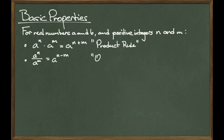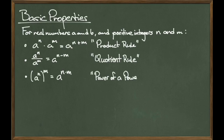The next rule is called the quotient rule. It says that if I am dividing a to the n by a to the m, then what I get is a to the n minus m. Now, consider the possibility of having a to the n raised to the power m. Then what you get is a to the n times m. This is called the power of a power rule. So whenever I have a power raised to another power, simply multiply the powers and keep the base the same.